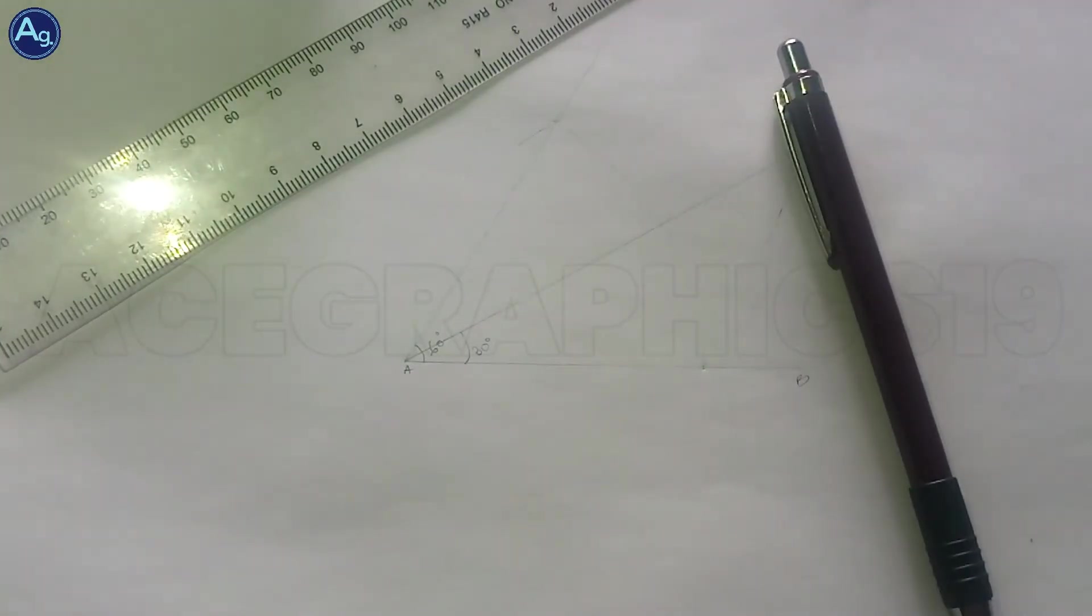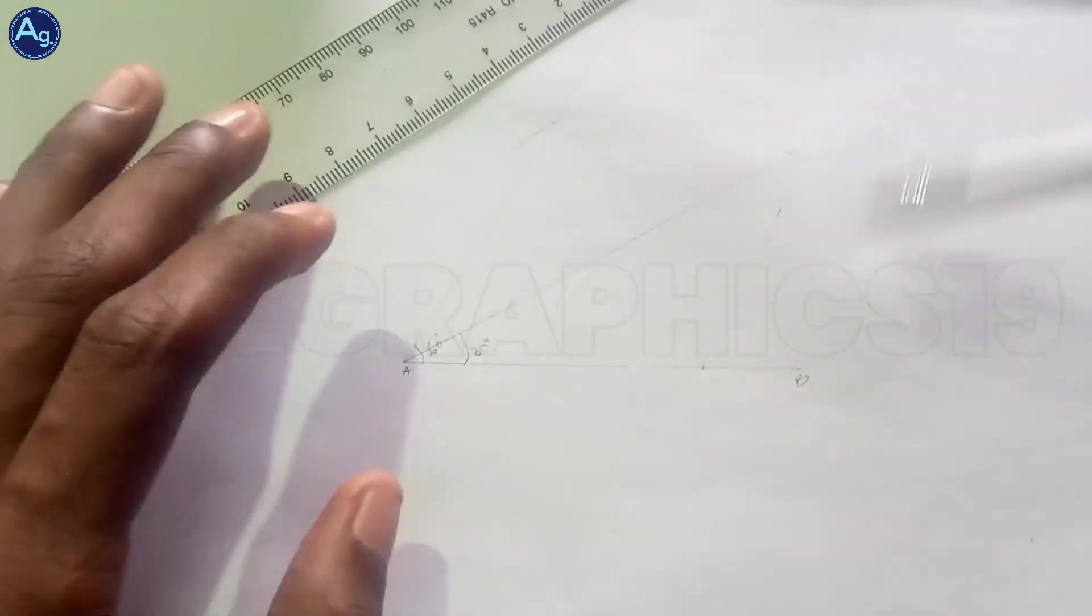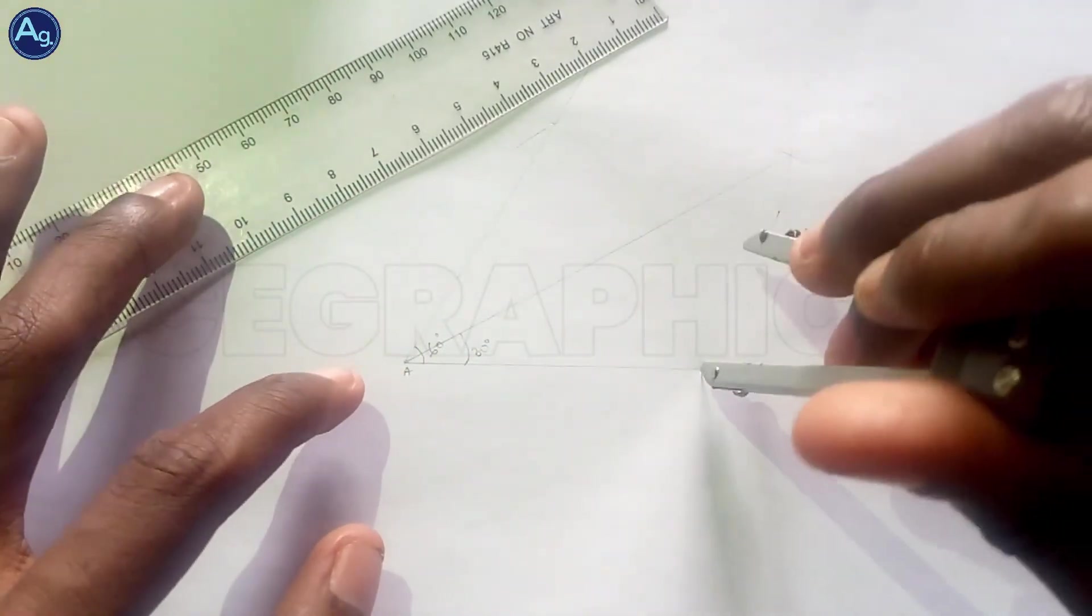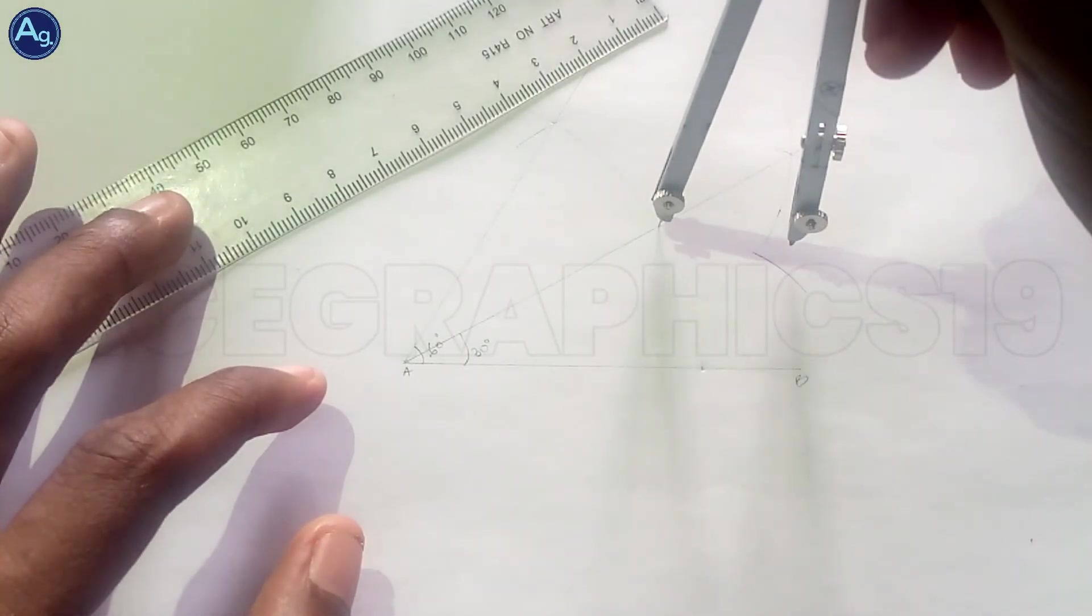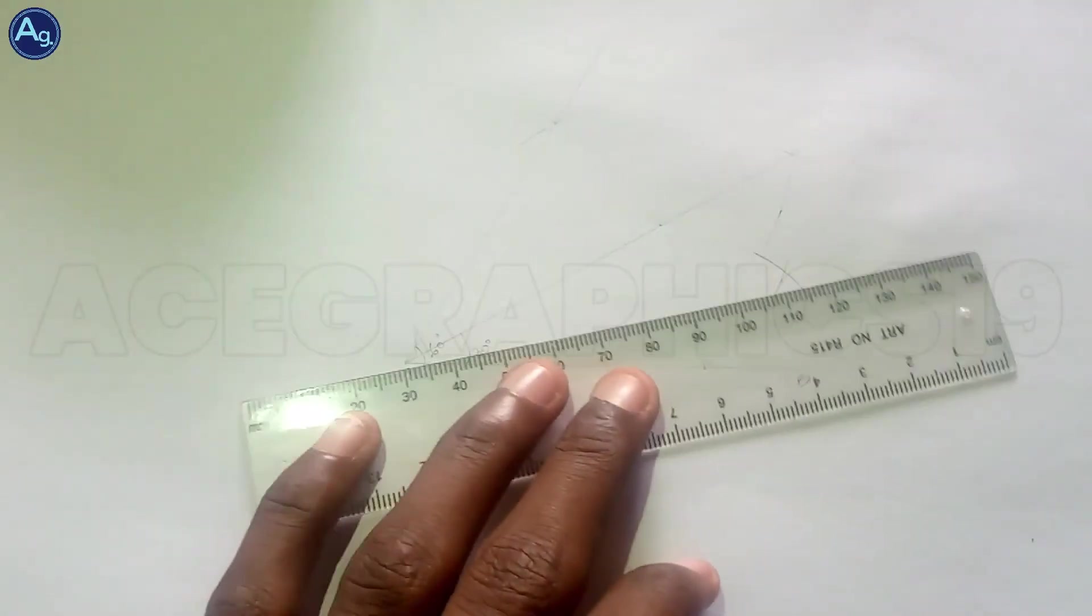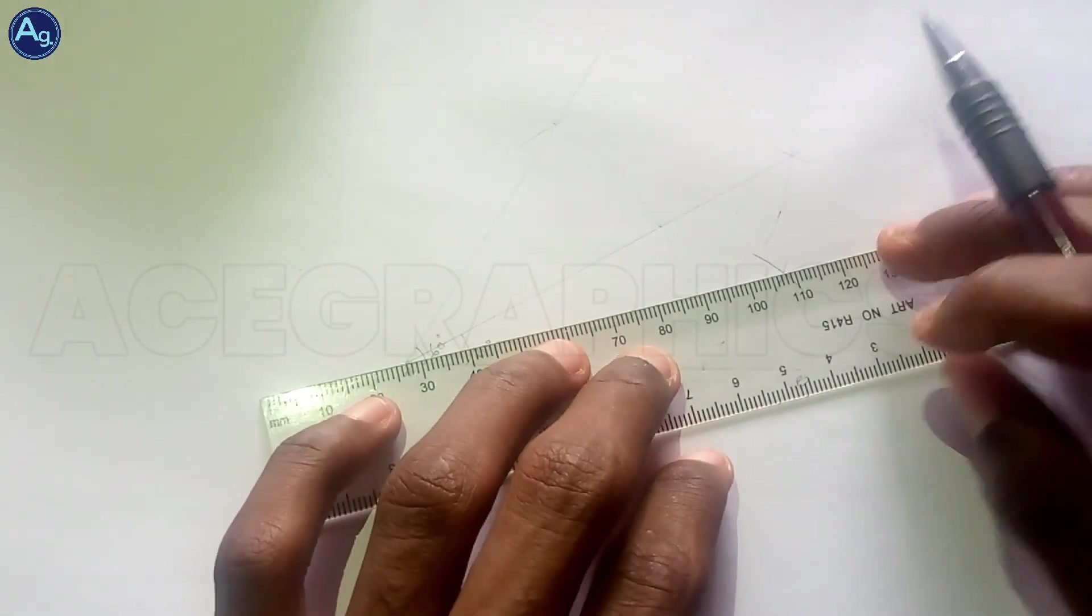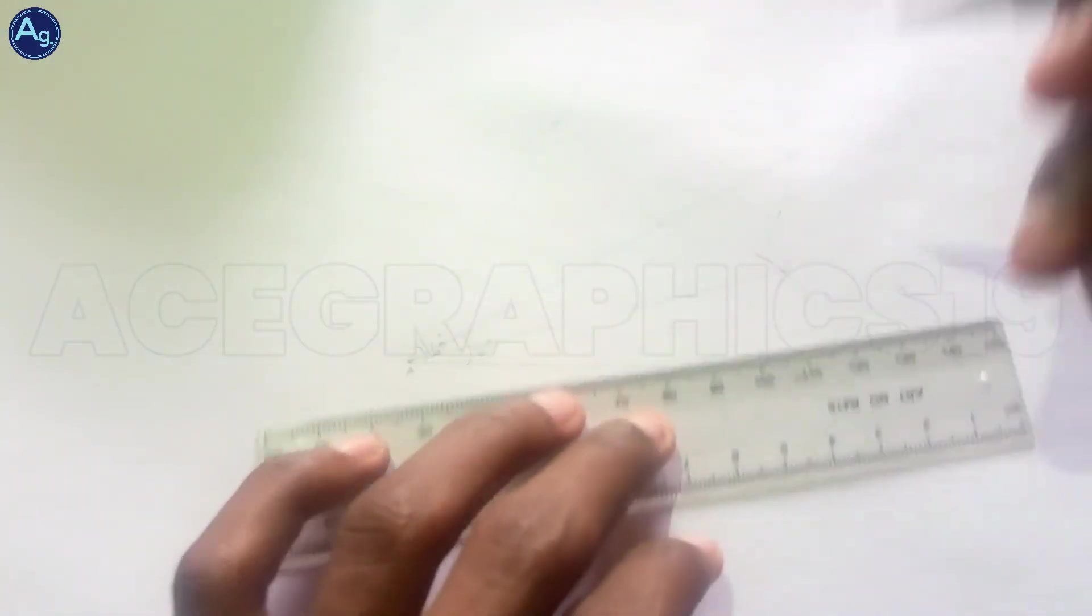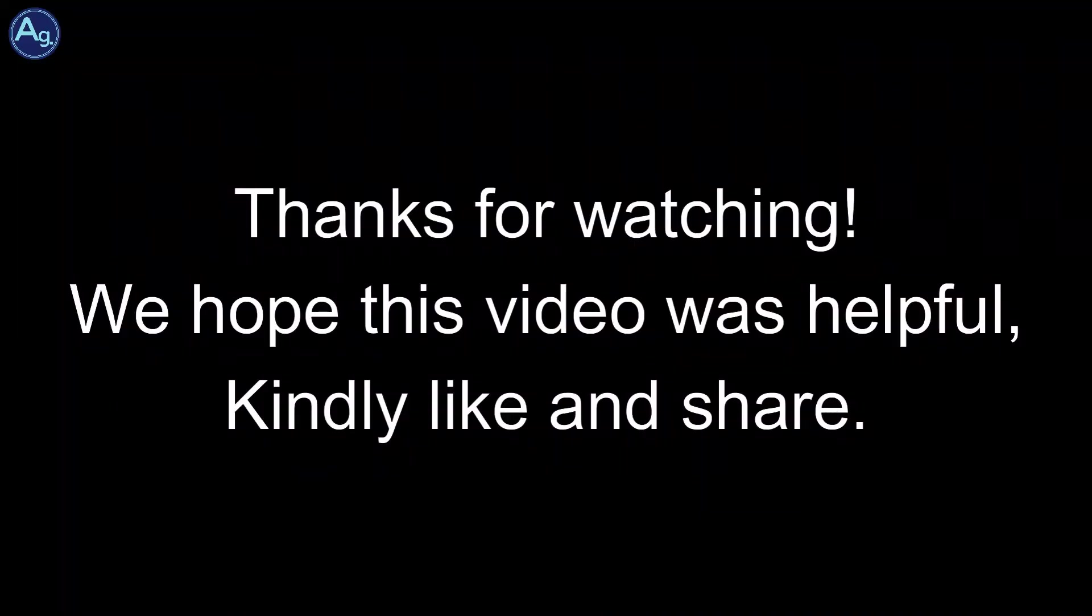To get 15 degrees, 30 divided by 2 gives us 15, so just bisect this angle. Pick any radius carefully, and this gives you your 15 degrees.